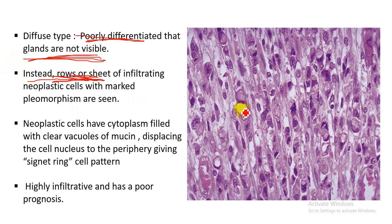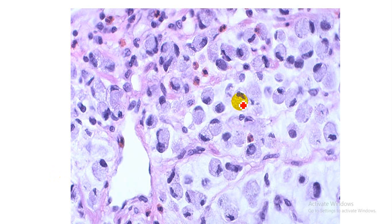You can see nuclear pleomorphism in the diffuse type. The neoplastic cells have clear vacuoles containing mucin, and the mucin displaces the nucleus toward the periphery. This gives the signet ring appearance. You can see many signet ring cells here — the mucin vacuoles are pushing the nucleus toward the periphery, giving the characteristic signet ring appearance.